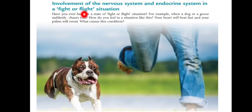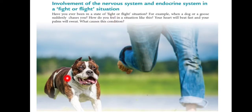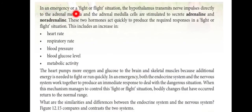Both the nervous system and endocrine system are involved in a fight or flight situation - whether to fight or run away. In an emergency, the hypothalamus transmits nerve impulses directly to the adrenal medulla, and the adrenal medulla cells are stimulated to secrete adrenaline and noradrenaline. These two hormones act quickly to produce the required response in a fight or flight situation.